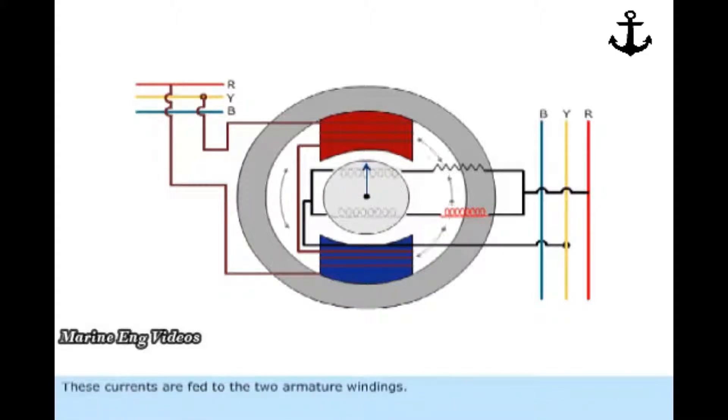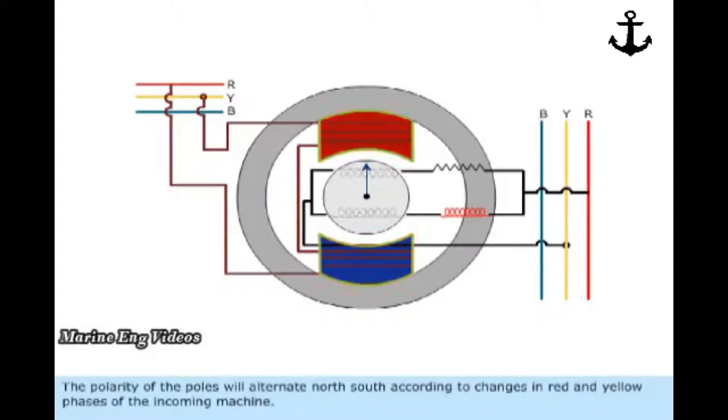These currents are fed to the two armature windings. They produce in them a rotating magnetic field in combination with the field in the poles. The polarity of the poles will alternate north-south according to changes in red and yellow phases of the incoming machine.